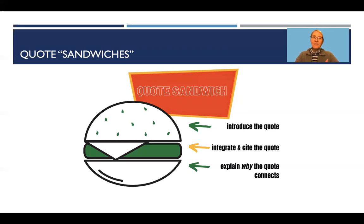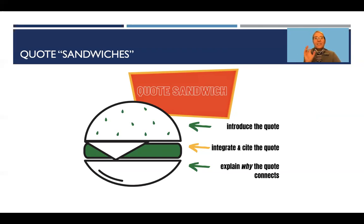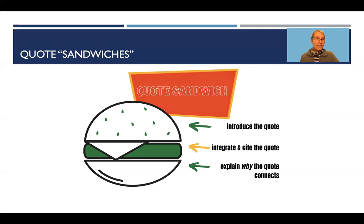When thinking about a quote sandwich, the top bun or bread is introducing your quote — saying something that announces why we're about to look at this thing, announcing the topic. In the center, you're integrating and citing the quote and presenting that material to your readers. And then the bottom bun is always making sure that as you leave the quote and return to your discussion, you're explaining why the quote connects to your claim, why it connects to other pieces of evidence you may have shared, and perhaps why it connects to the greater discussion — taking that sandwich and suggesting why it connects back to your thesis statement.